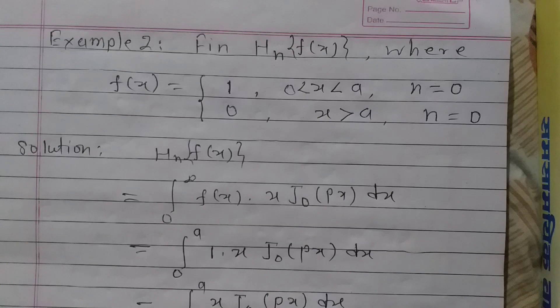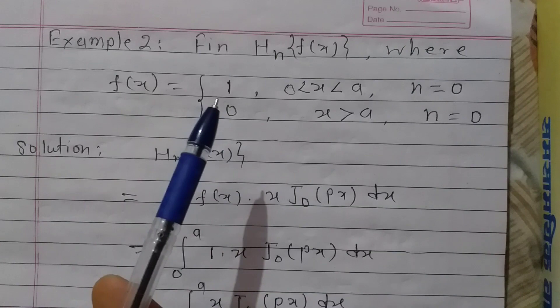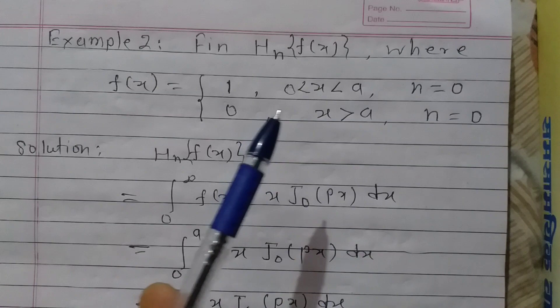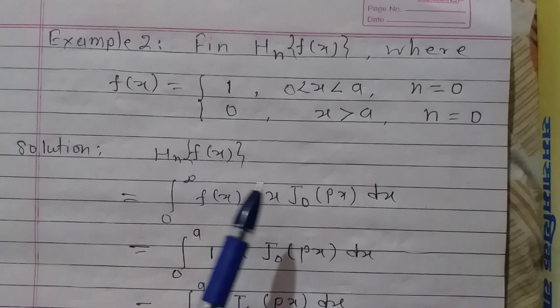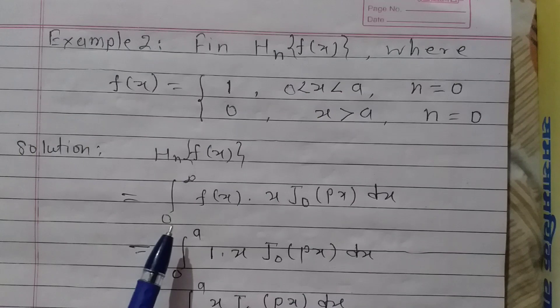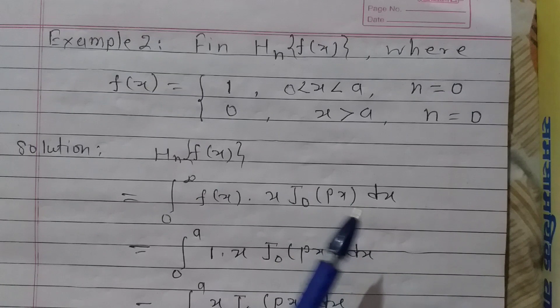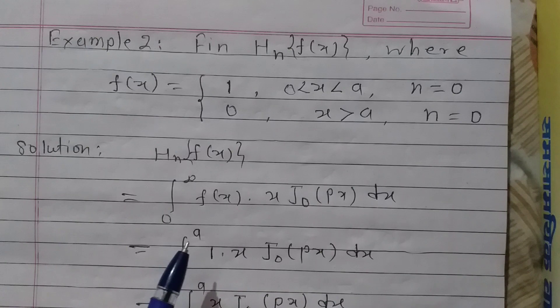Consider the next example: find the Henkel transform of zeroth order of a function f(x), where f(x) is defined as 1 in the interval 0 to a, where a is some positive real number, and 0 elsewhere. So let us find the Henkel transform of f(x). By definition, the Henkel transform of f(x) of zeroth order is the integration over 0 to infinity of f(x) times x J₀(px). Since f(x) equals 1 in [0, a], we write 1 in that interval and 0 elsewhere.